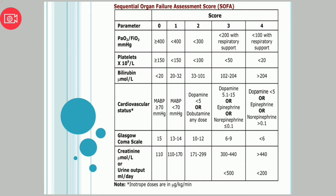Now we are going to look at the Sequential Organ Failure Assessment chart. The chart has parameters scored from 0 to 4. There are six parameters: PF ratio (partial pressure of O2 divided by fractional inspired O2), platelets, bilirubin, cardiovascular status, GCS, and renal function. By remembering or referencing this chart, we can accurately calculate the patient's SOFA score.